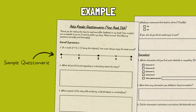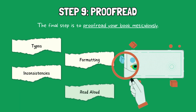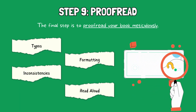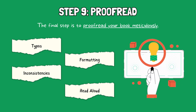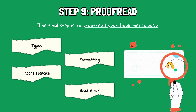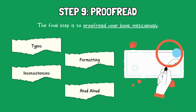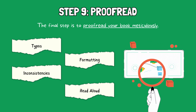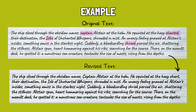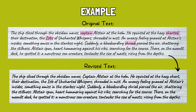Here is an example of a sample questionnaire you might give to beta readers. Step 9: Proofread. The final step is to proofread your book meticulously. Look for any remaining typos, formatting errors, or inconsistencies. Consider reading the book aloud again to identify issues with flow and rhythm. In the original text, there were a couple of typos, such as 'Captain' should be capitalized as part of a title, 'Shriek' should be spelled with an I, and the word 'Charted' should be 'Chart.' In the revised version, we have corrected the typos to create a higher quality version of the draft.